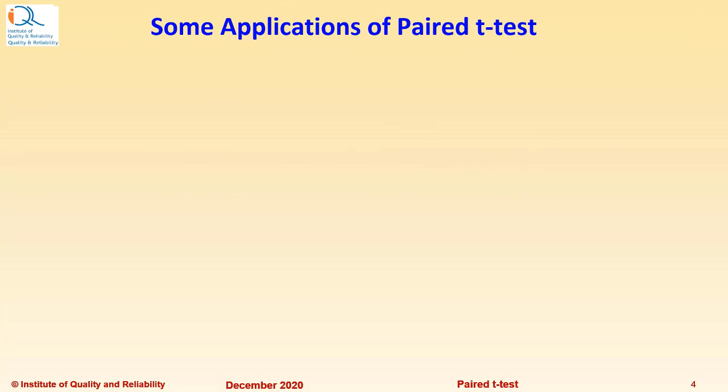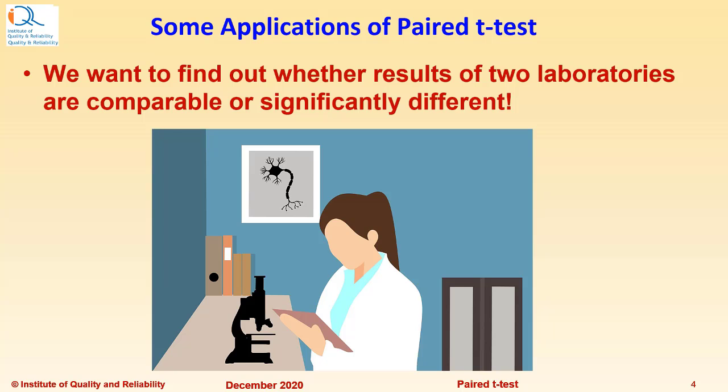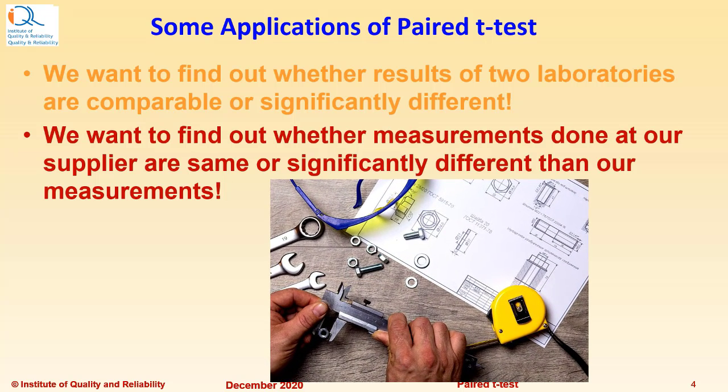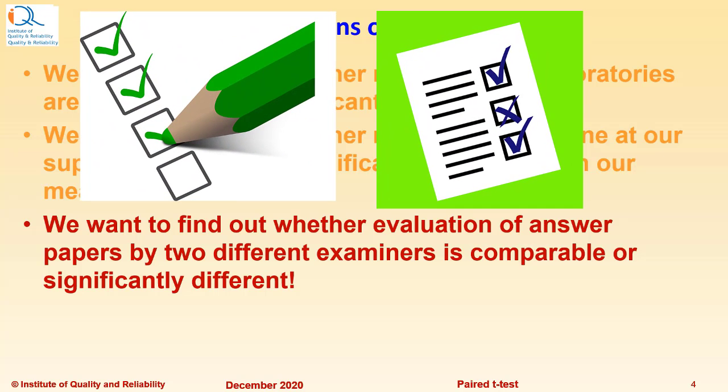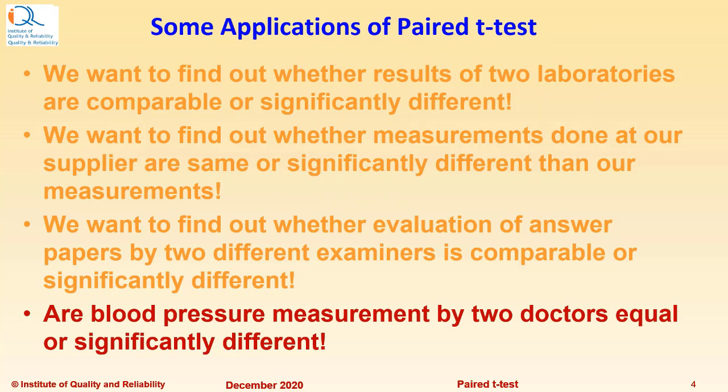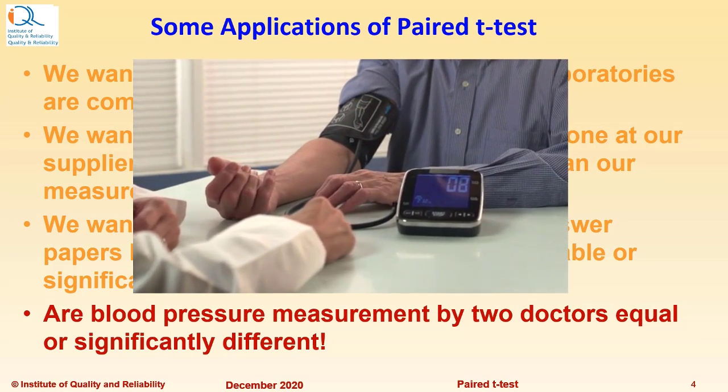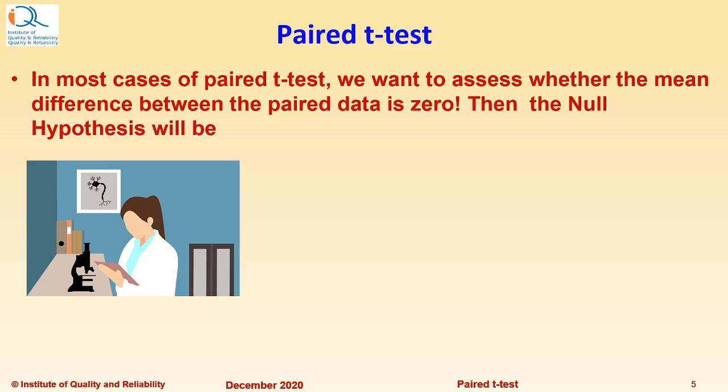Let us see some applications of Pair T-Test. For example, we want to find out whether results of two laboratories are comparable or significantly different, whether measurements done at our supplier are same or significantly different than our measurements, whether evaluation of answer papers by two different examiners is comparable or significantly different, or are blood pressure measurements by two doctors equal or significantly different.